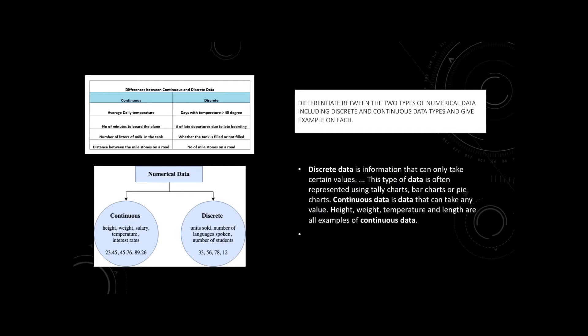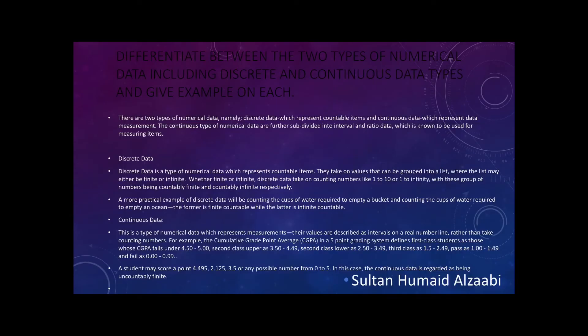Continuous data is data that can take any value — height, weight, temperature, and length are all examples of continuous data. There are two types of numerical data: discrete data, which represents countable items, and continuous data, which represents measurements. The continuous type is further subdivided into interval and ratio data, used for measuring items.